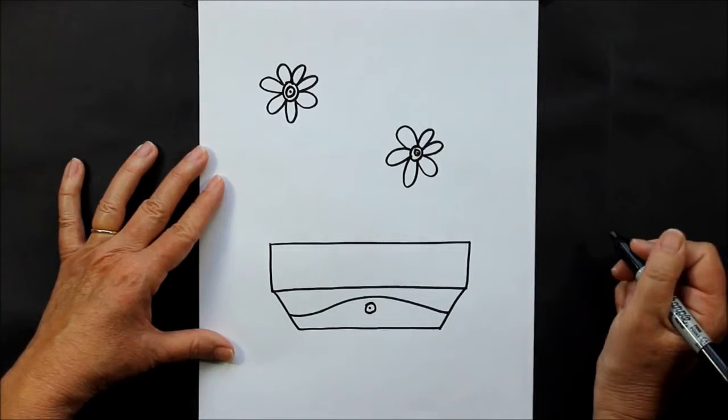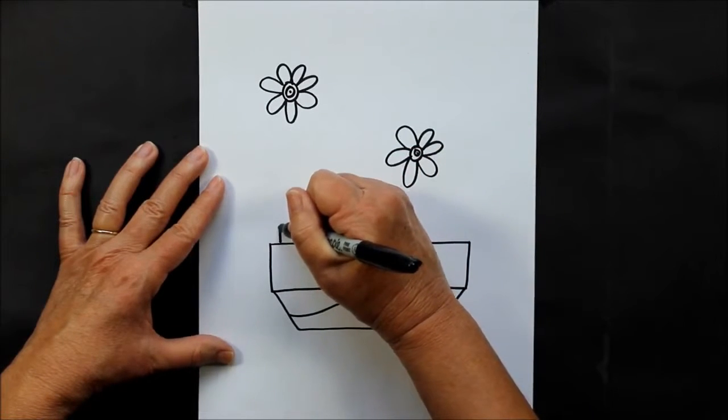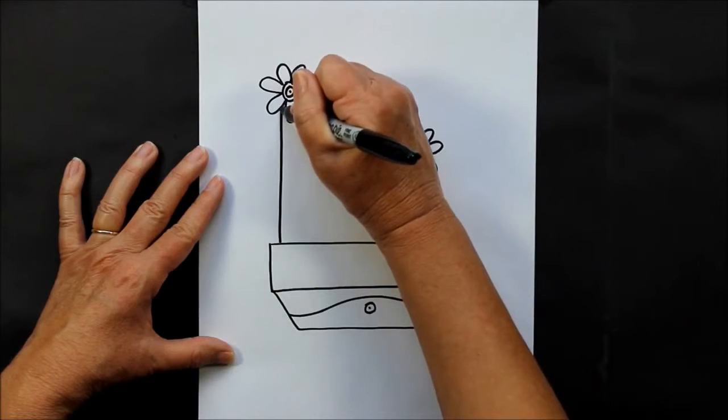Now we are going to make our cactus. So we're going to come straight up and curve down.